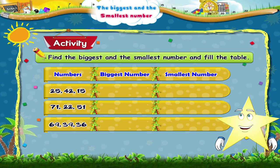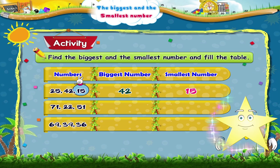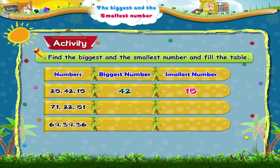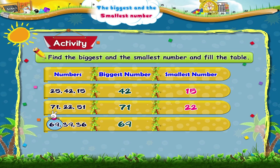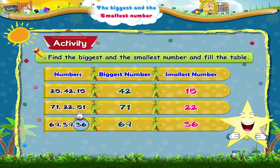In the first set of numbers, 42 is the biggest number and 15 is the smallest number. In the second set, 71 is the biggest number and 22 is the smallest number. In the third set, 69 is the biggest number and 36 is the smallest number.